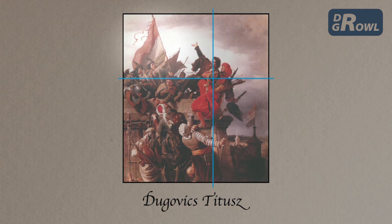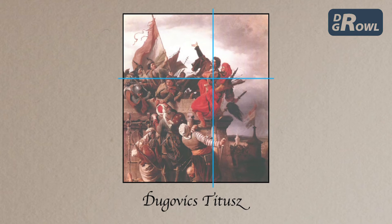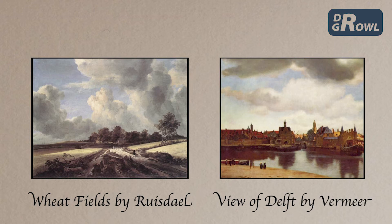In the painting Dugovic Titus by Chandor Wagner, the heroic scene is depicted with the golden section. In order for us to see the point of this heroic act, the protagonist looks at the flag. They sacrifice their lives for a more sublime notion.